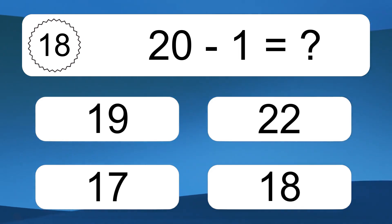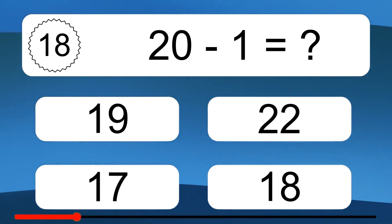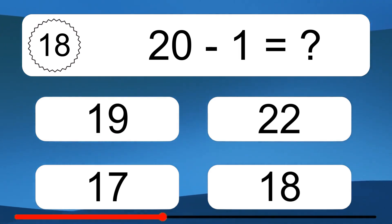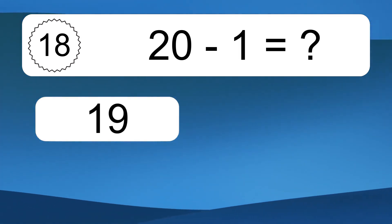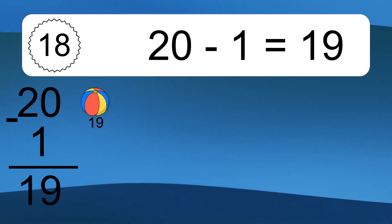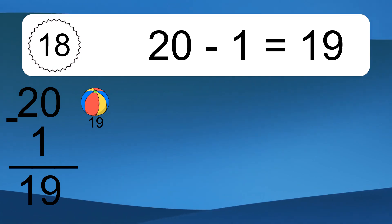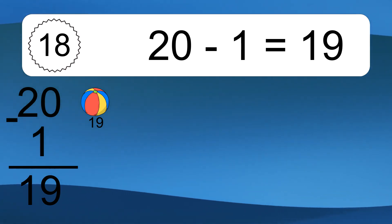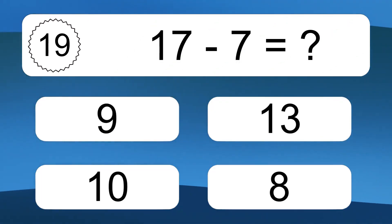20 minus 1 equals 19. Let's count it: 19. 17 minus 7 equals what?